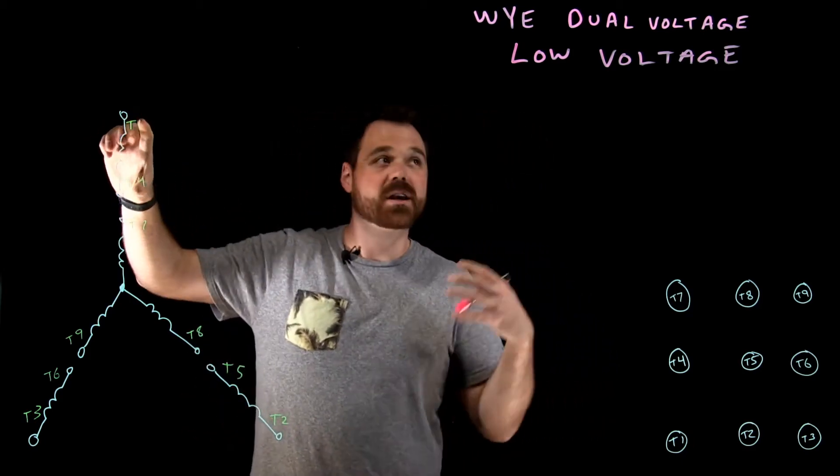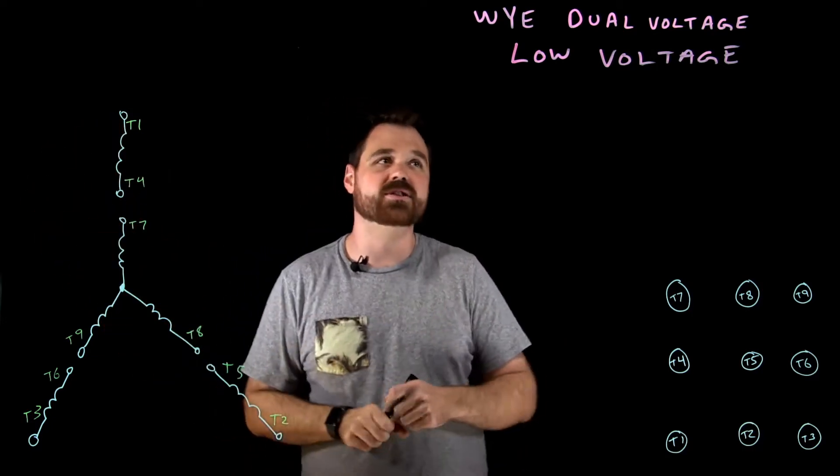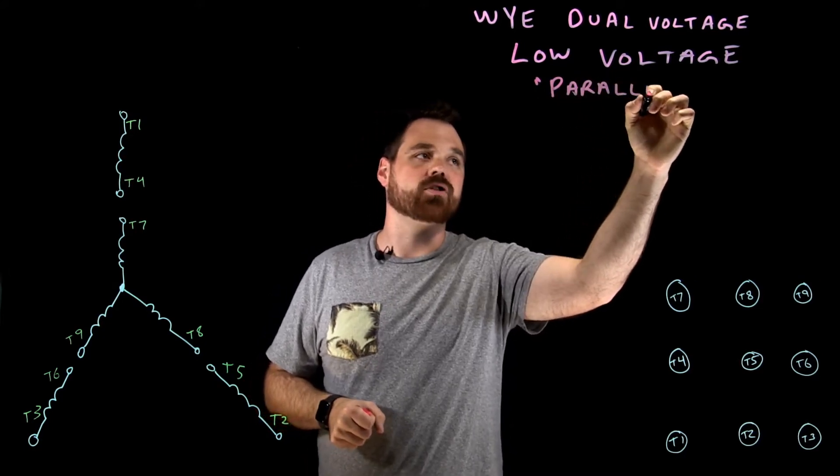For this one, we're going to take these windings, and because we're going low voltage, we're going to put those windings in parallel with each other. This can often be called a parallel connection.